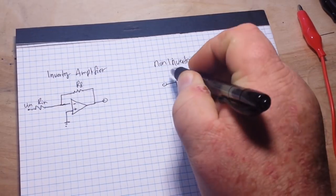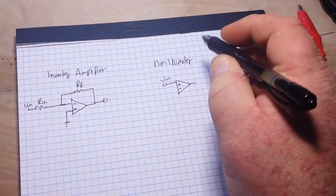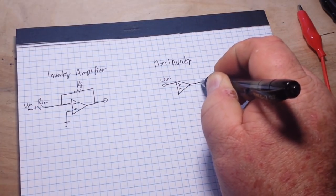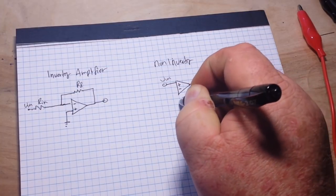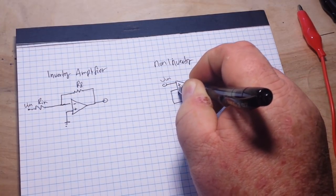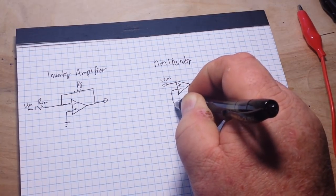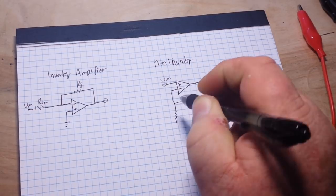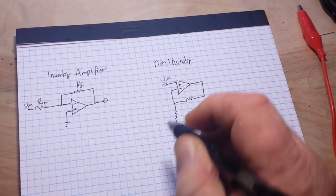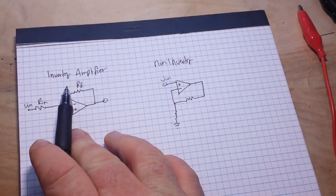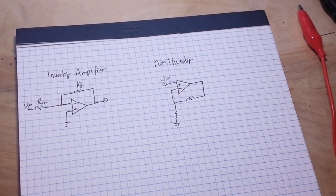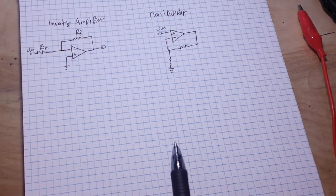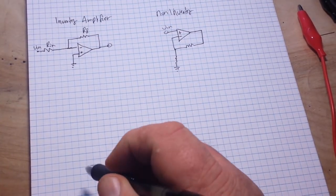And then once again we have a feedback resistor here, and it feeds into the inverting input. And then we also send it through another resistor to ground. So there we have the inverting and the non-inverting forms of the op-amp as an amplifier. Now it can also be set up as a comparator.